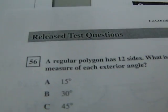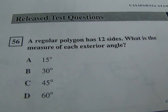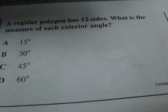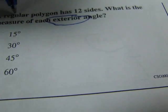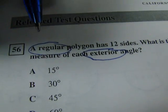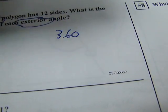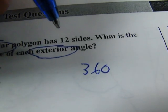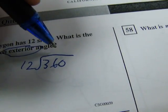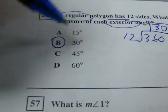56. Last one in this standard. A regular polygon has 12 sides. What is the measure of each exterior angle? Well, the key word here is 12 and regular. Regular means all the angles will be the same, and exterior tells us again that it adds up to 360. So if it has 12 sides, it has 12 angles. So 360 divided by 12 is 30. So the answer is B.